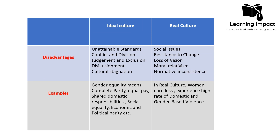Regarding disadvantages, in the case of ideal culture, as discussed, it represents perfect standards — so it is considered unattainable. Since it cannot be fully achieved but society strives to hold it, it sometimes leads to conflict and division, and sometimes leads to judgment and exclusion. For example, if a group living in society does not conform to the norms of ideal culture, they are considered excluded from the society.